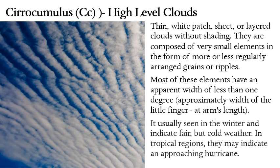Cirrocumulus clouds are arranged in a layer like ripples or small wavelets. They are usually seen in winter and indicate fair but cold weather. In the tropics — such as the south of North America, north of South America, Central and Latin America, and the northern part of Africa — they may indicate an approaching hurricane.